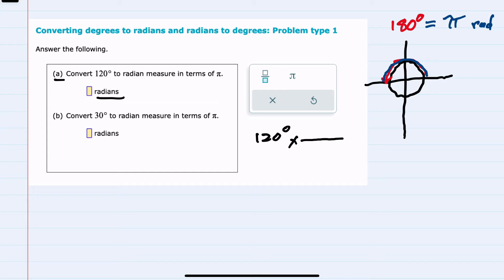Since I want to cancel the degrees, I am going to put our 180 degrees in the denominator. And what that is equal to in the numerator, pi radians.